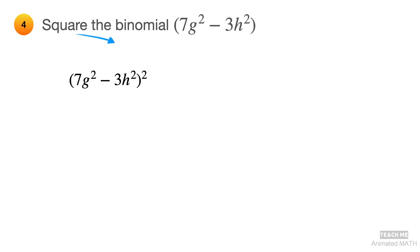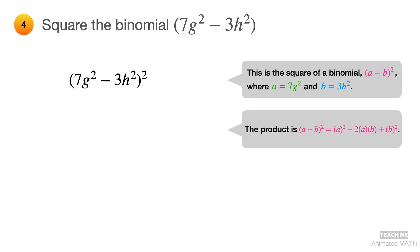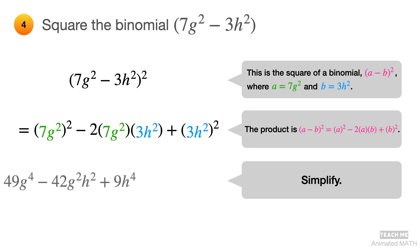First, square the binomial. Then use the perfect square subtract times subtract pattern, which is a minus b squared, but with a equal to 7g squared and b equal to 3h squared. Its product is a squared minus 2ab plus b squared. So substitute 7g squared for all a's and substitute 3h squared for all b's. Simplify the expression, and the final answer is 49g raised to the 4th minus 42g squared h squared plus 9h raised to the 4th.